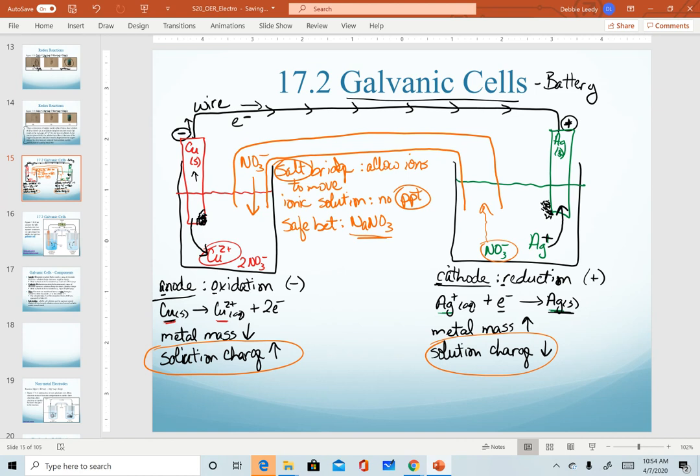On our cathode side, since our charge is decreasing over here, I want my cation in my salt bridge to travel to that side. And again, cations in solution in the anode would also travel over.